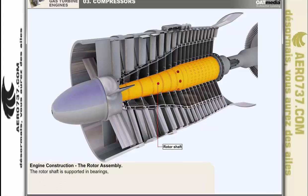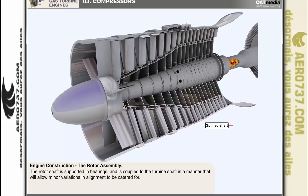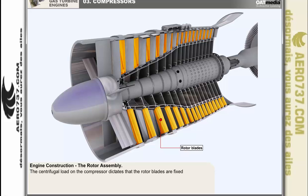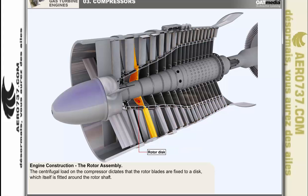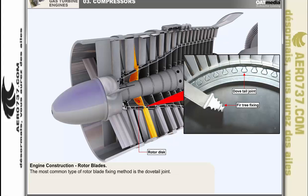The basic methods of construction commonly used in compressor assembly include: the rotor shaft supported in bearings and coupled to the turbine shaft in a manner that allows for minor variations in alignment. The centrifugal load imposed on the compressor dictates that the rotor blades are fixed to a disc fitted around the rotor shaft. The most common fixing method is where the root of the blade is shaped to form a dovetail joint and secured to the disc by a pin or locking tab.